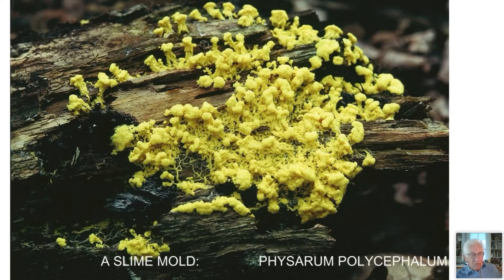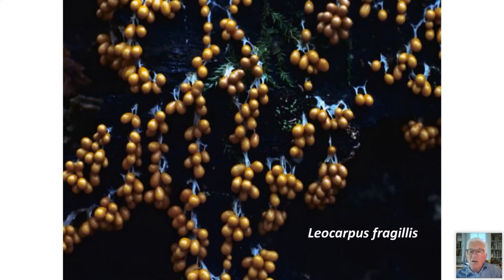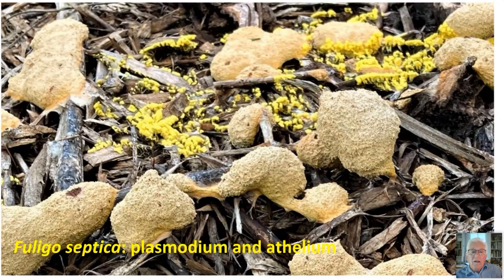One interesting thing about slime molds is you can only tell them apart when they become mature — before that, they all look the same. This plasmodium streaming here is another species called Leocarpus fragilis. You have to wait until they mature to tell the difference. Here is Leocarpus fragilis — you can see it looks quite different from Physarum polycephalum. Here's Fuligo septica and here's its plasmodium — you can see it looks the same at the early stage but different at maturity.